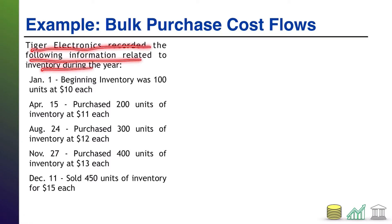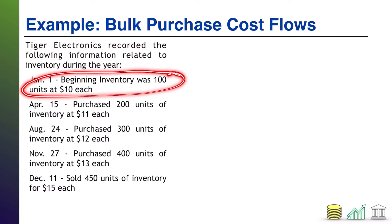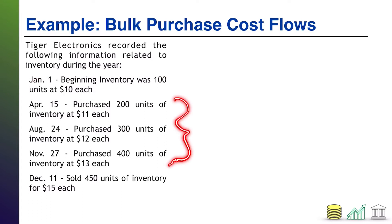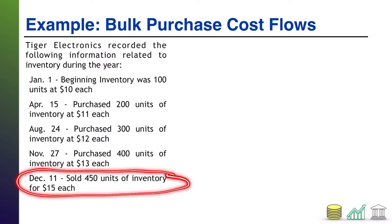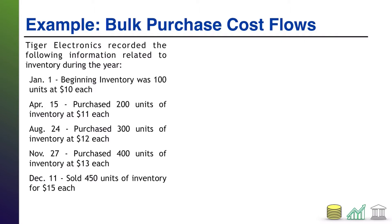Here I give you an example. Tiger Electronics recorded the following information related to inventory during the year: a beginning inventory with its unit count and value, three bulk purchases and their value, and the company sold 450 units for $15 each. When you approach a problem like this, the first thing you want to figure out is the total cost of each batch. That beginning inventory was 100 units at $10 each, so that first batch had a cost of $1,000.